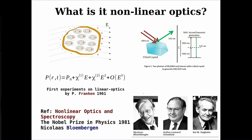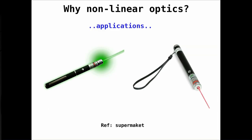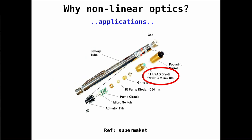This color-change effect was also the first nonlinear phenomenon measured experimentally. A practical example from everyday life is the green laser pointer. If you open one, you discover it actually contains a red laser diode, and a crystal inside that changes the color from red to green using a nonlinear process. That's why you see green light from a green laser pointer.